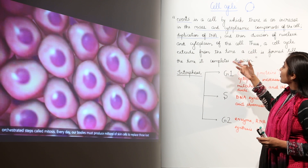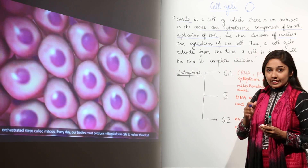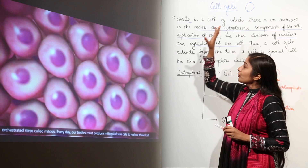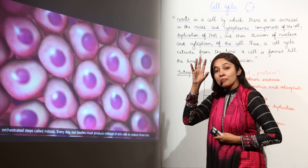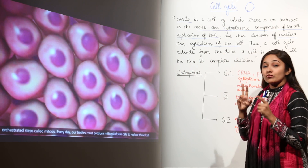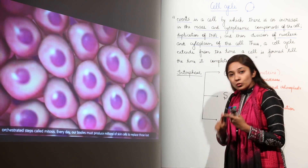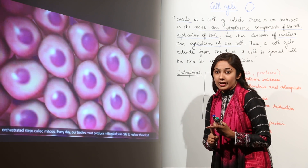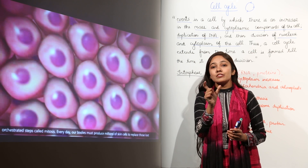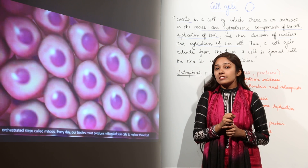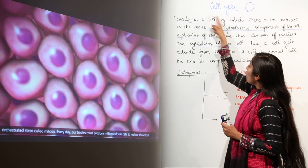DNA duplicates, and then the division of the nucleus and cytoplasm finally divides the cell. The cell cycle starts from interphase, which we have discussed during mitosis, and it ends when the nucleus and cytoplasm have fully divided. Karyokinesis is the division of the nucleus, and cytokinesis is the division of the cytoplasm. So mitosis is just one phase of the whole cell cycle.